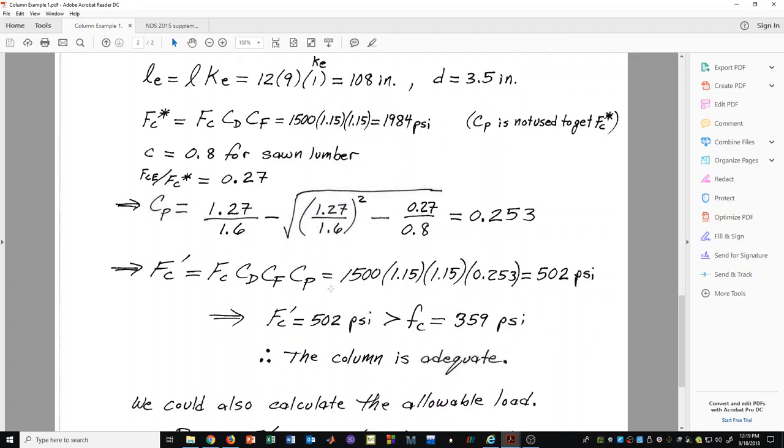Now we have C sub P, and so we can finally calculate our allowable compressive stress: FC, CD, CF, CP. You plug in all of those numbers, we get 502 psi.